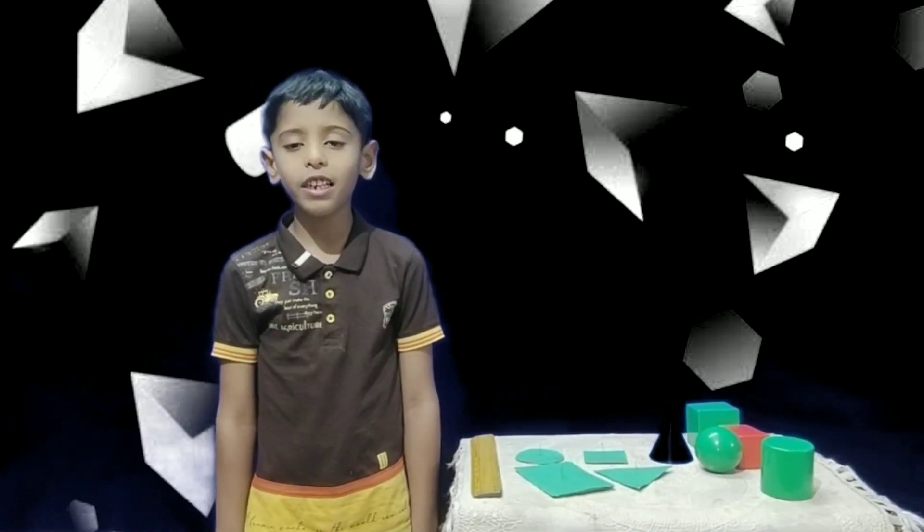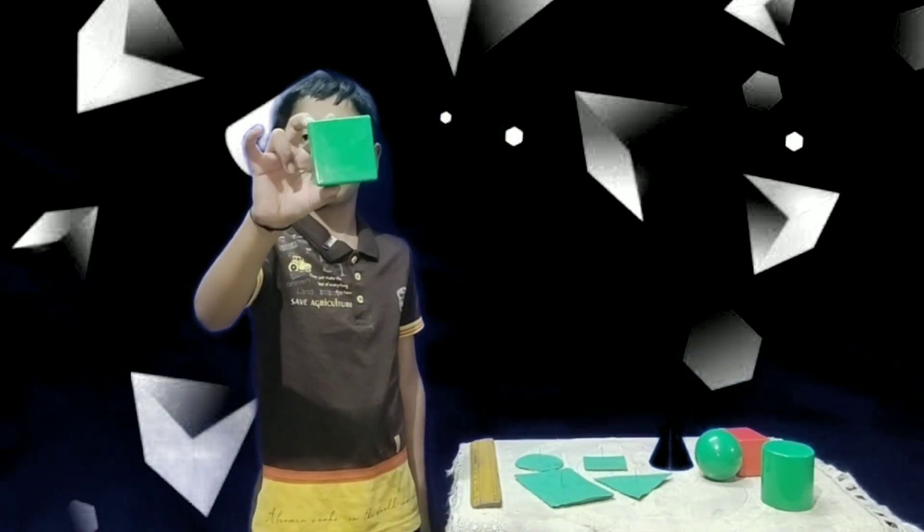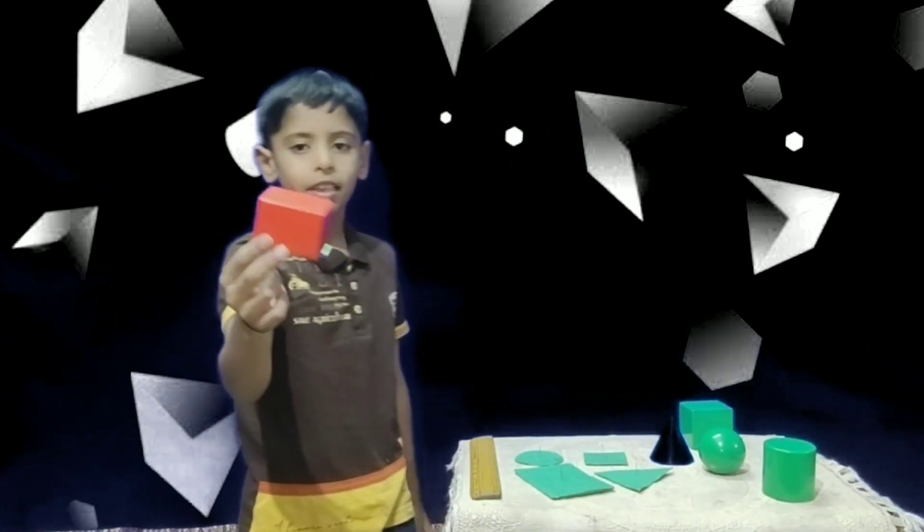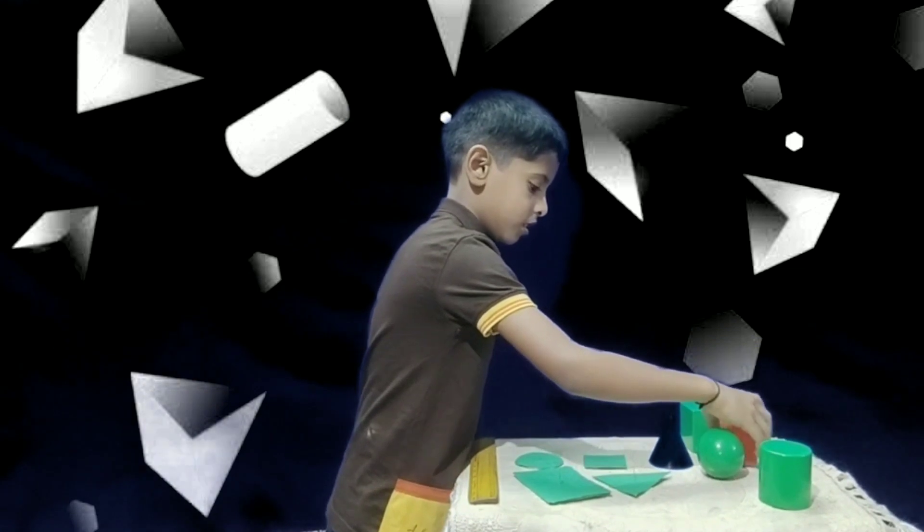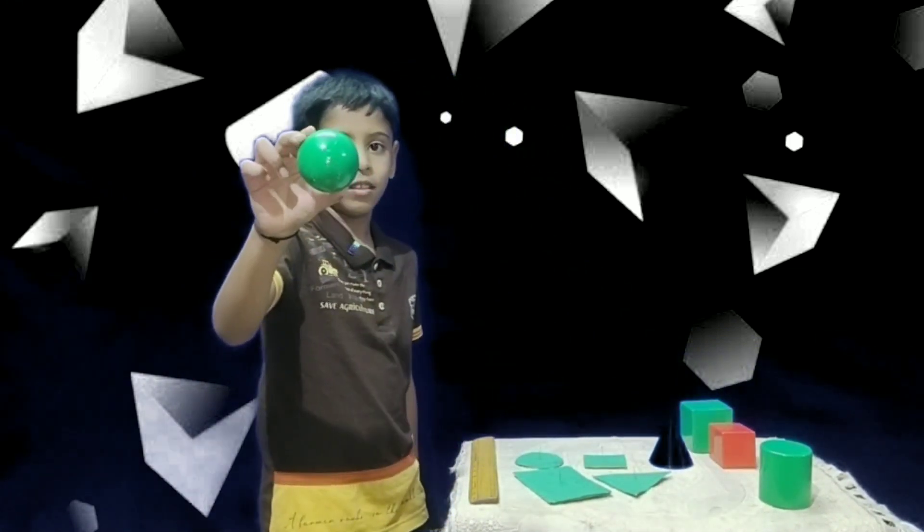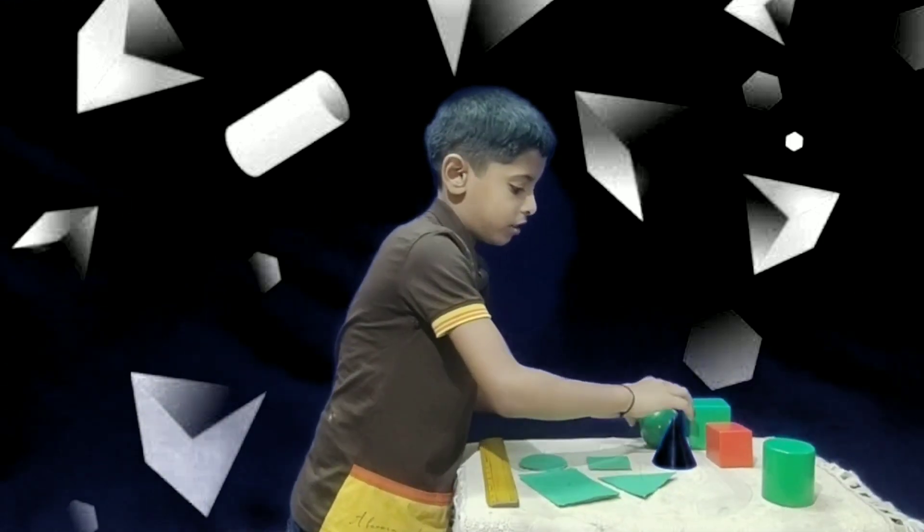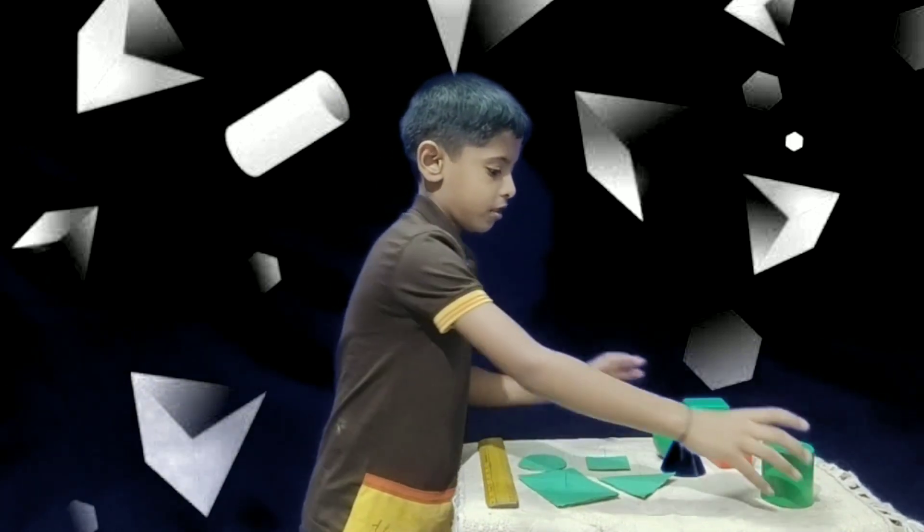Now let's move towards solid shapes. There are different types of solid shapes. There are cube, cuboid, sphere, cone, cylinder.